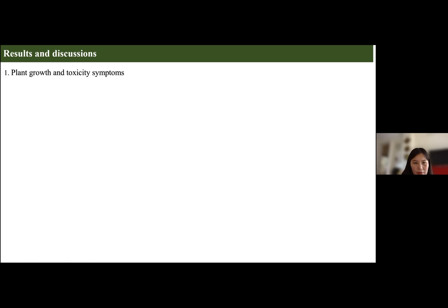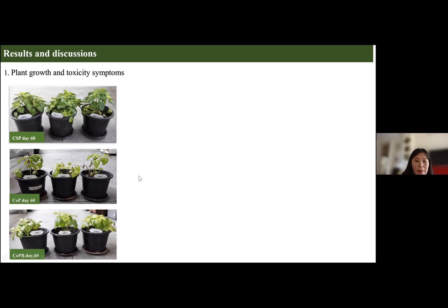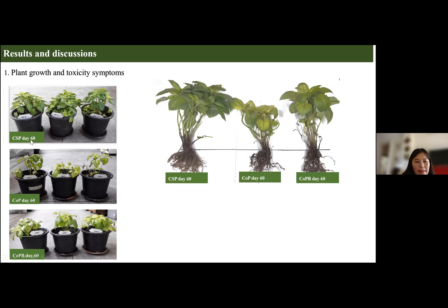Over the period of 60 days, gradual changes in plant morphology were observed. At the end of 60 days, we can see the first plant grown in clean soil was the healthiest, with the highest biomass, shoot length, and root length.